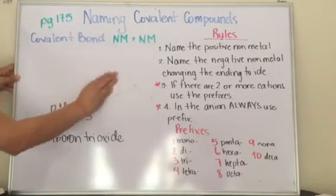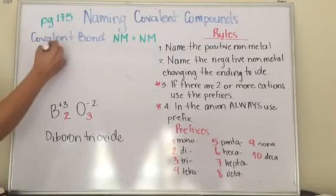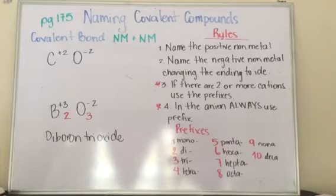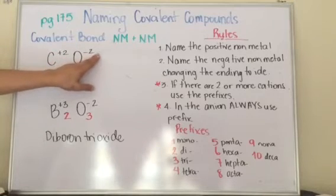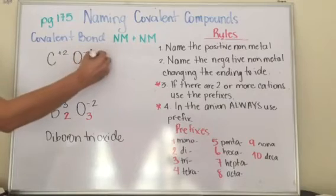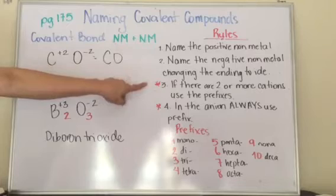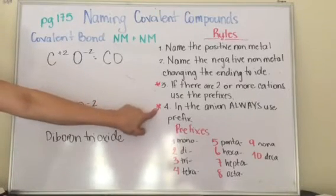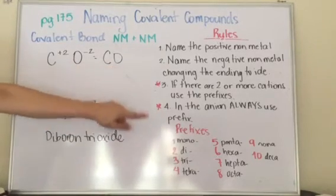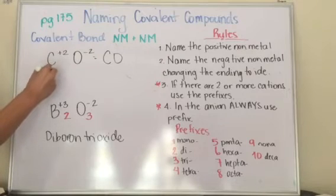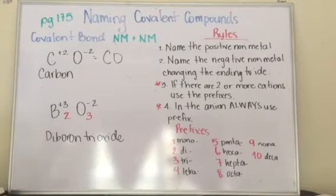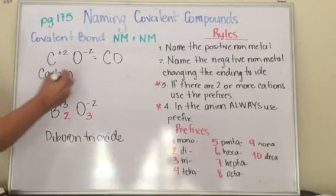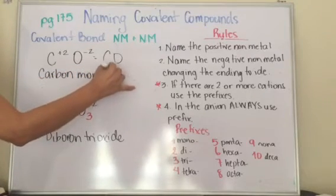Now what happens if you only have one negative non-metal? Carbon can have a charge of positive four or positive two. So this time we're going to use carbon as a charge of positive two. Carbon positive two, oxygen negative two — equal to zero. So that's my chemical compound: CO. My rule says if I have two or more, I use prefixes on the cation — I only have one, so I don't need a prefix. But for the anion, I always use a prefix. So if I only have one oxygen, I'm going to use mono. Rule one: name the positive non-metal — carbon. Rule two: the negative, change the ending to -ide — that's oxide — and always use the prefix. So it's carbon monoxide.